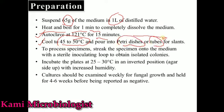Once the temperature reaches 50 to 45 degrees Celsius, pour it into sterilized Petri plates or tubes. If poured into tubes, we mostly make slants. Then process the specimen by streaking it using a sterile wire loop.